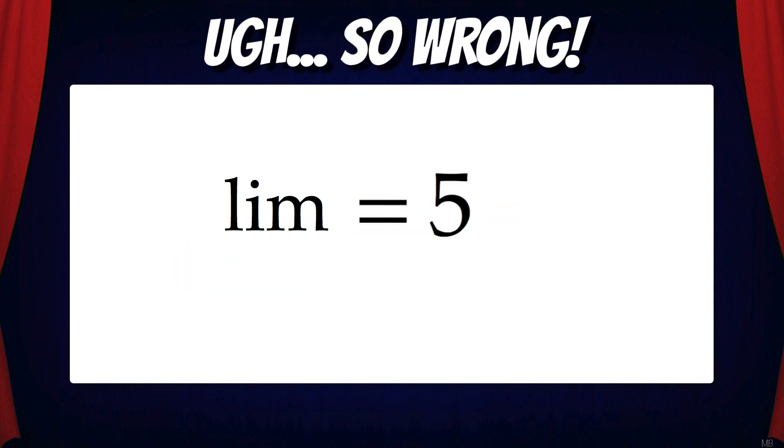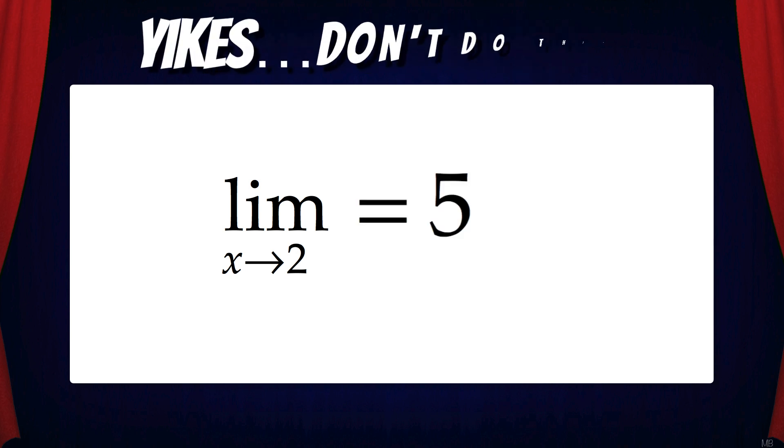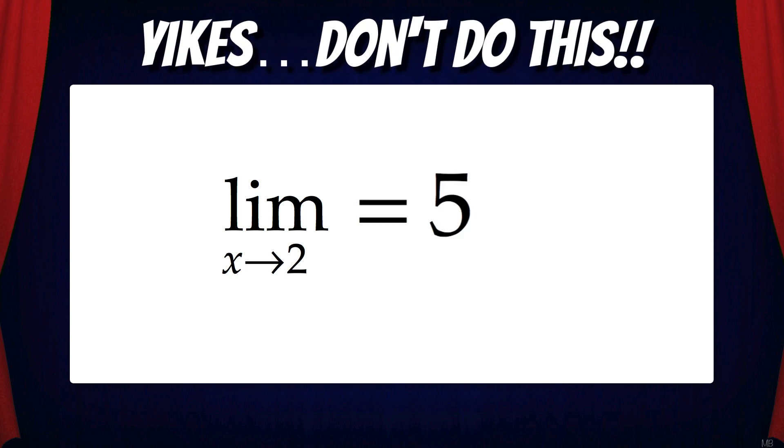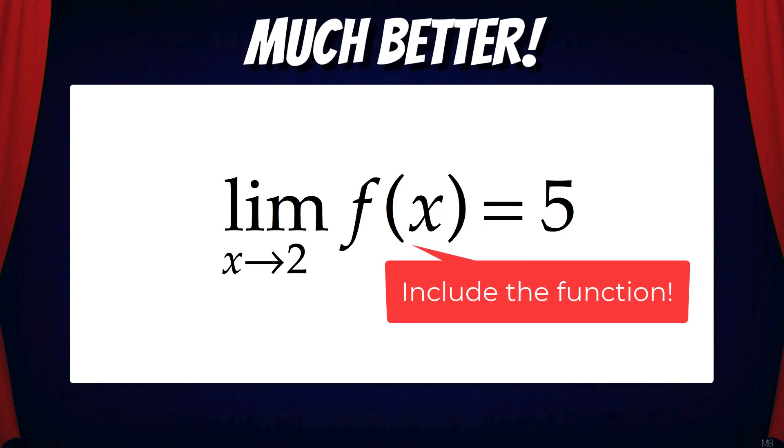Lim equals 5. That's just completely wrong. We forgot to say limit of f of x and the value that x is approaching. And finally, the limit as x approaches 2 equals 5. This is incorrect because we forgot to include the function f of x.